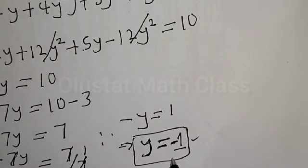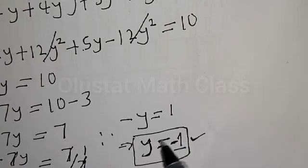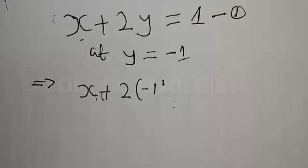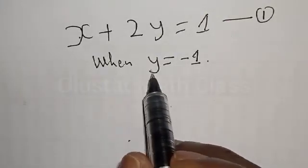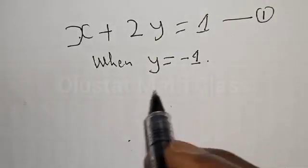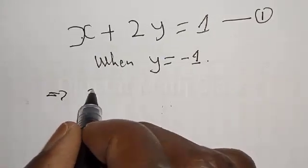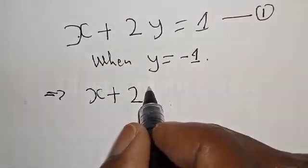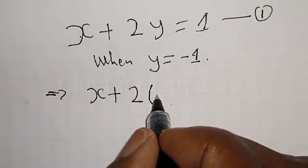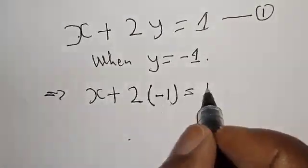Now we've got the value of y to be equal to minus 1. So let's substitute for y in any of the equations — either equation 1 or equation 2. For this case I will prefer equation 1, which is s plus 2y equal to 1. When y equals minus 1, this implies s plus 2 times minus 1 equals 1.